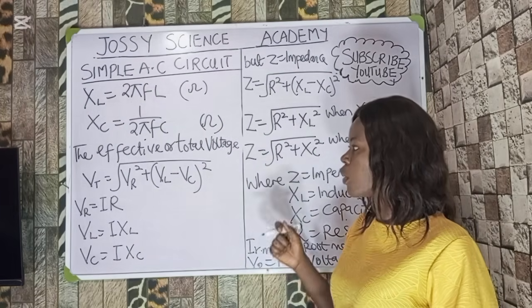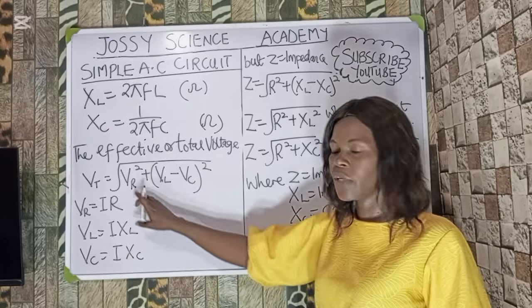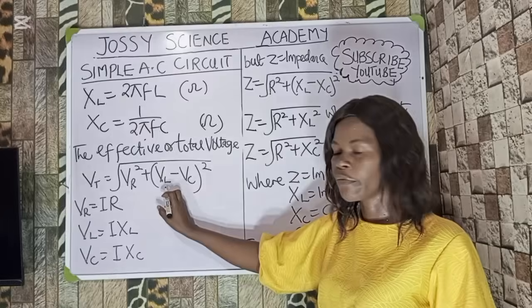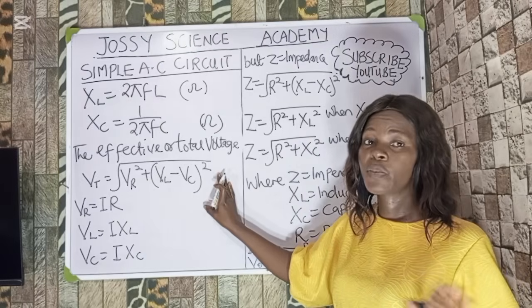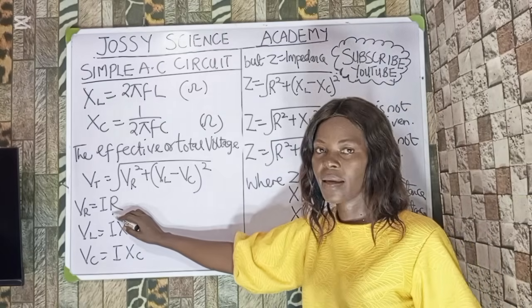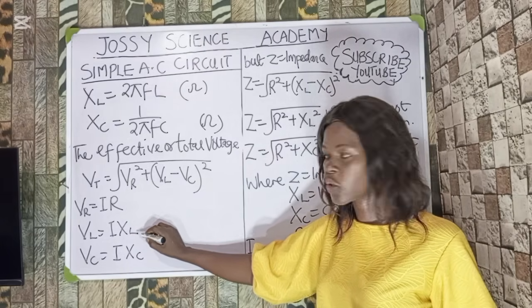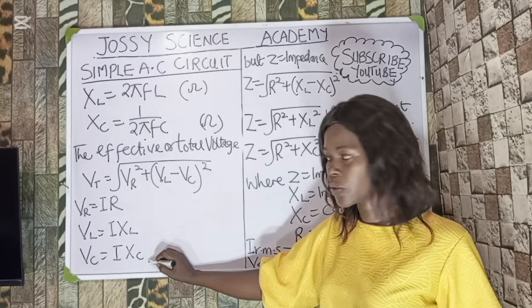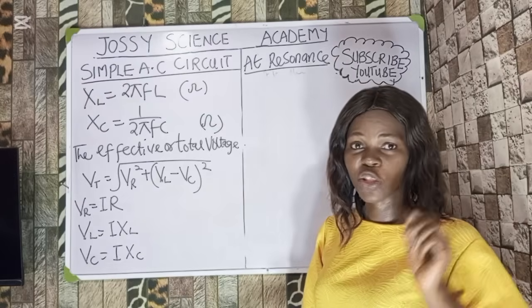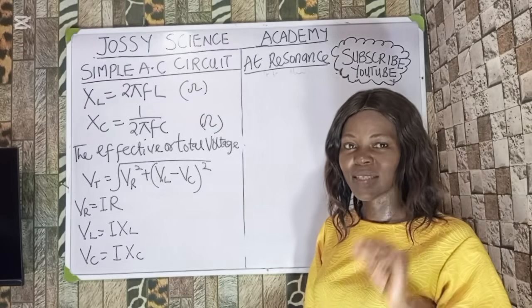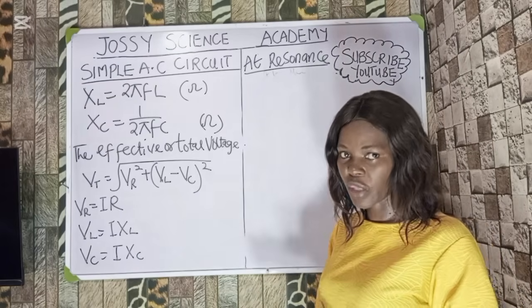The total or effective voltage is: V_total equals root of V_R² plus (V_L minus V_C)², following the same pattern as impedance but replacing Z components with voltages. V_R is voltage across the resistor, V_L is voltage across the inductor, and V_C is voltage across the capacitor. At resonance, maximum current is obtained, and resonance occurs when X_C equals X_L — that is, when capacitive reactance equals inductive reactance.